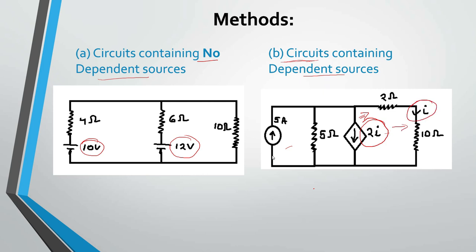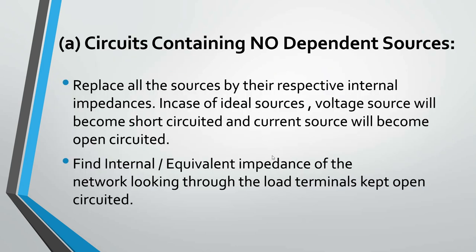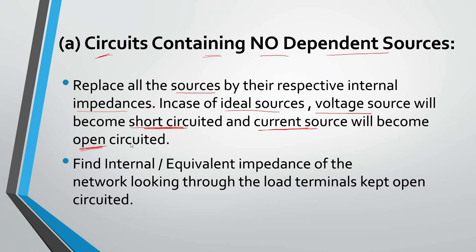First we will see the first category — circuits containing no dependent sources. For such cases, we will replace all the sources by their respective internal impedances. If the sources are ideal, then the voltage source will become short-circuited and the current source will become open-circuited. Then we will find the internal or equivalent impedance of the network looking through the load terminal, kept open-circuited.